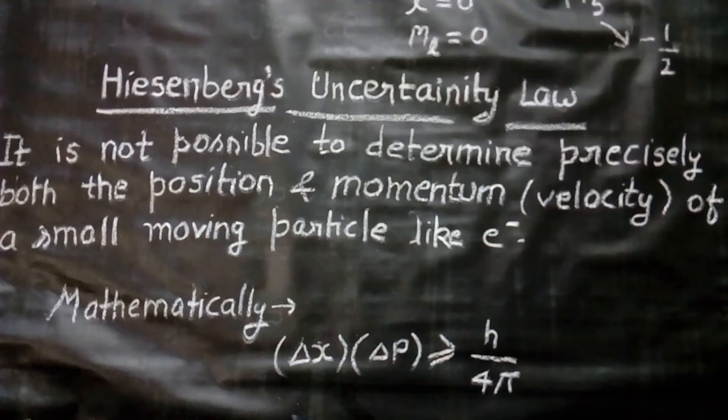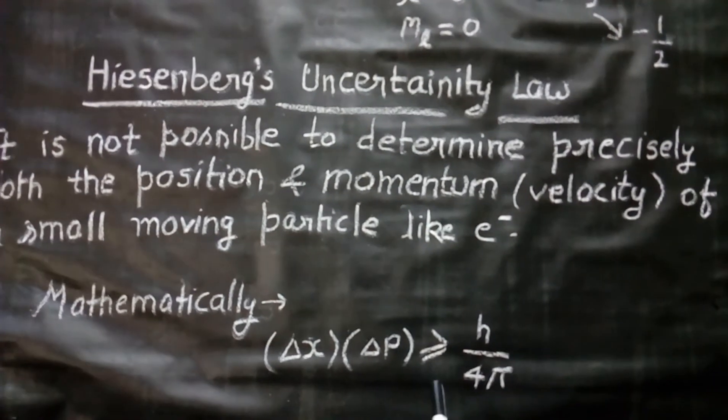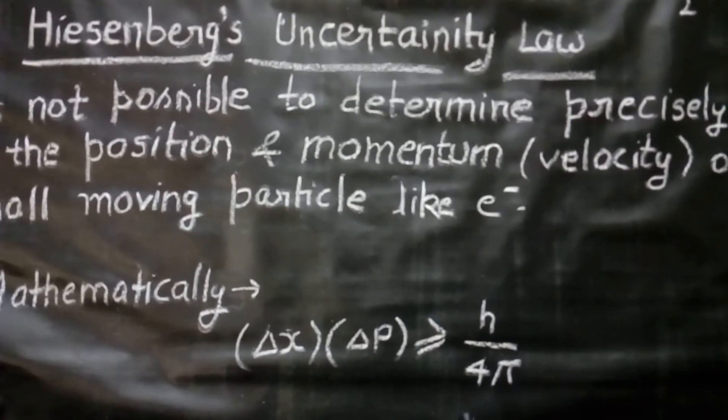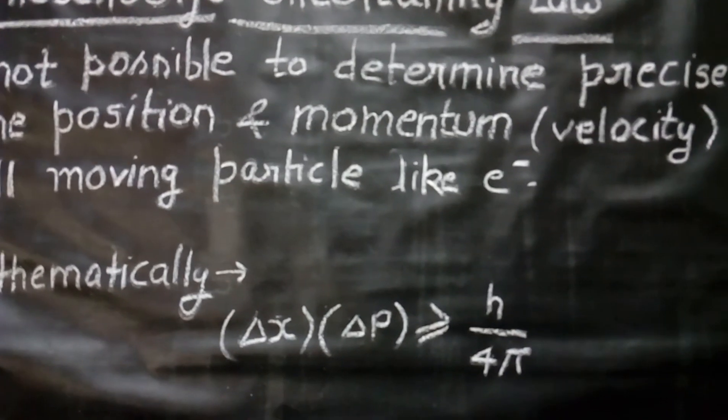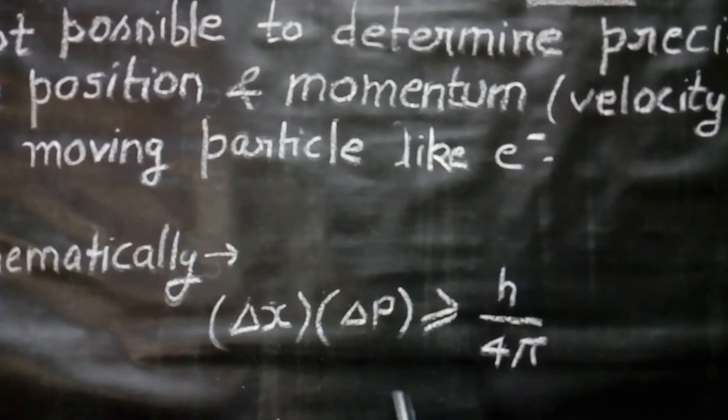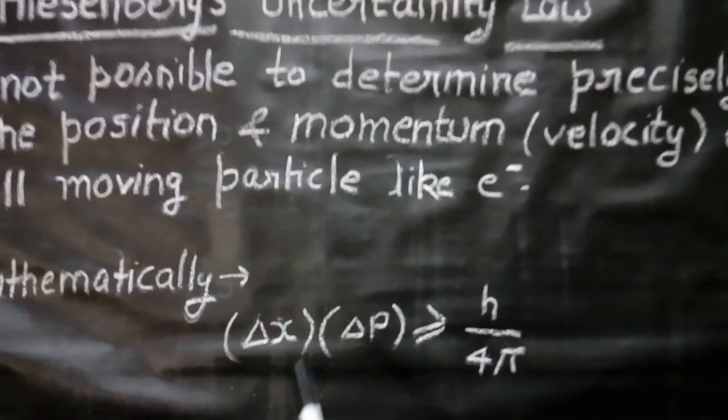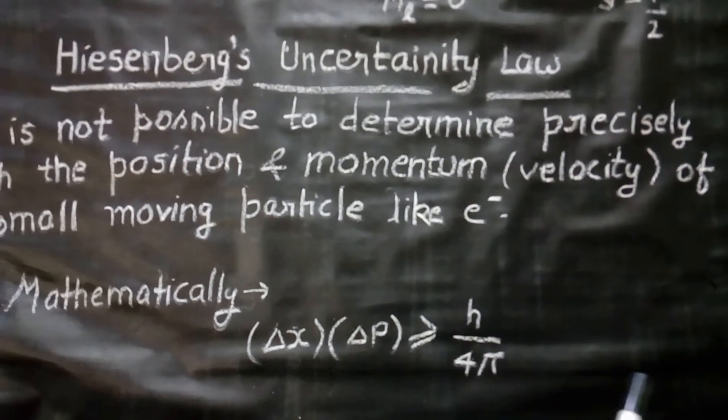Mathematically, it can be written as: del s into del p is greater than or equal to h upon 4 pi. Where del s is the uncertainty in the position and del p is the uncertainty in the momentum. This is the Heisenberg's uncertainty law.